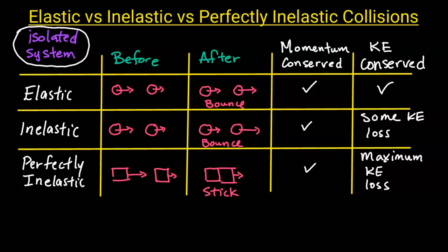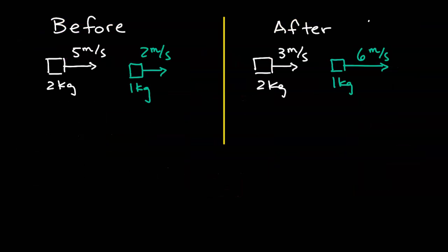Now let's take a look at some examples and see if we can identify whether the situation is an elastic, inelastic, or perfectly inelastic collision. Here we have a collision between a 2-kilogram object and a 1-kilogram object, both of them moving to the right. The 2-kilogram object is moving to the right at 5 meters per second, and the 1-kilogram object moves to the right at 2 meters per second. After they collide, they bounce off.